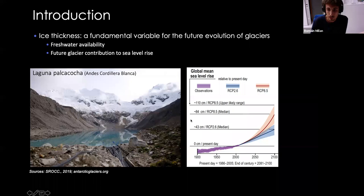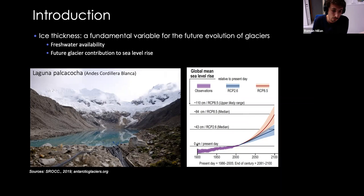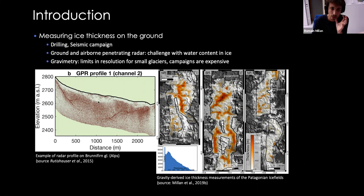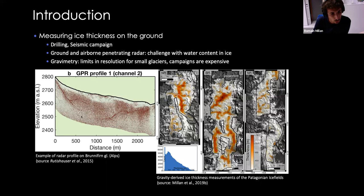Ice thickness is a fundamental variable in glaciology. It allows us to quantify the amount of fresh water stored in glaciers and is a fundamental input variable for glacier models to predict the future contribution of glaciers to sea level rise. However, measuring ice thickness has always been a challenge. The most used technique is ground or airborne penetrating radar, but for temperate glaciers it's a challenge because the water content within the ice and heavy precipitation impairs the radar signal from reaching the bottom of the ice.